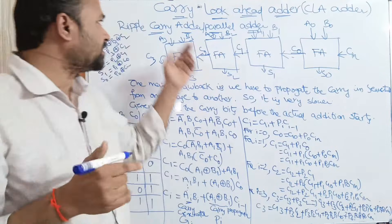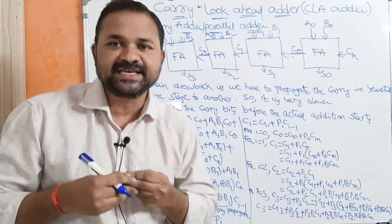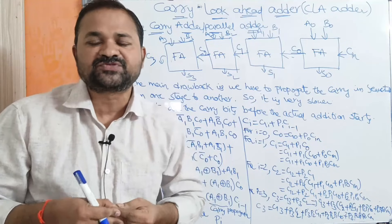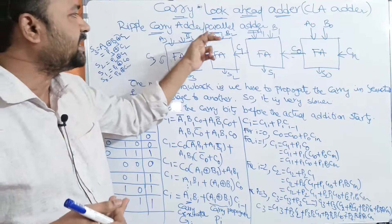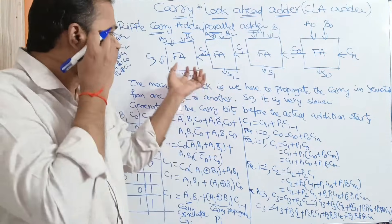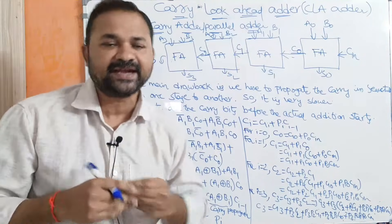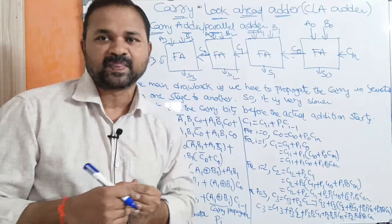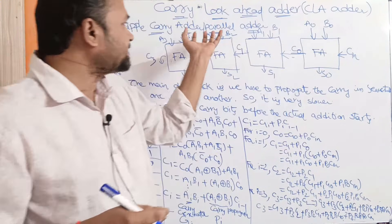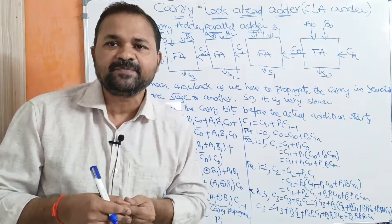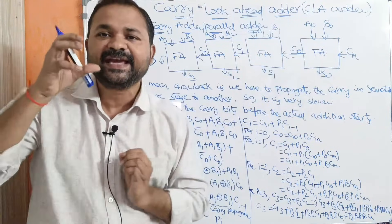Now let us discuss the carry look ahead adder, or CLA adder in short. It is mainly useful to overcome the drawbacks of the ripple carry adder, also called the parallel adder. The circuit diagram is the same for both. Here we have four full adders, and in a parallel adder all inputs are supplied to the full adders in parallel.